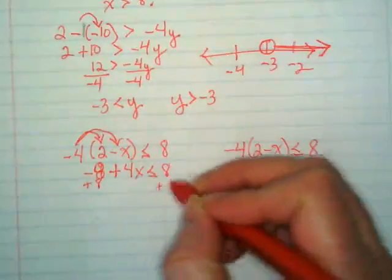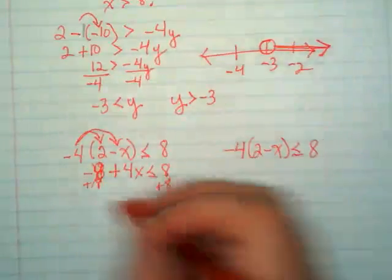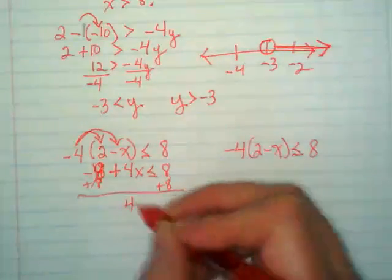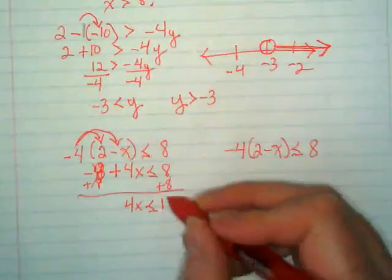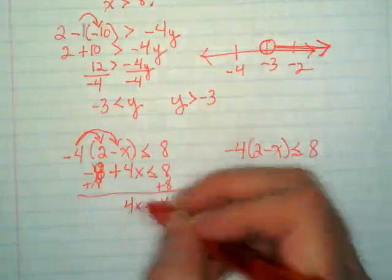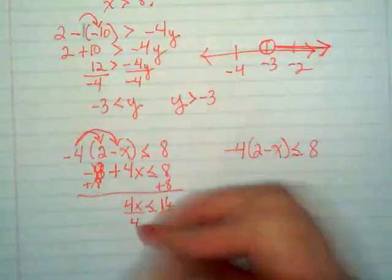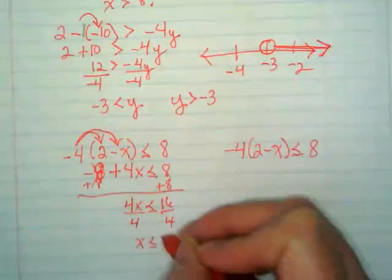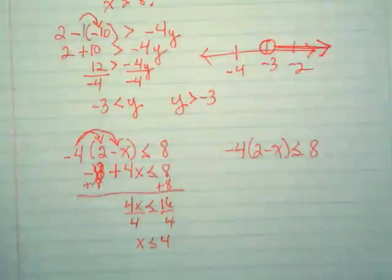And then we're going to add the 8 to both sides to cancel it over here. We end up with 4x is less than or equal to 16. And I'm going to divide by 4, and I get x is less than or equal to 4.